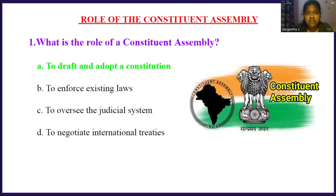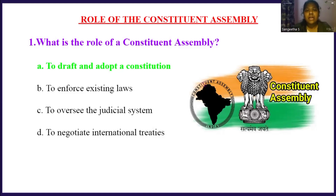In the role of constituent assembly, we will discuss a few multiple choice questions. The first one is: what is the role of a constituent assembly? Option A, to draft and adopt a constitution. Option B, to enforce existing laws. Option C, to oversee the judicial system. Option D, to negotiate international treaties. The right answer is option A, to draft and adopt a constitution. The main role of a constituent assembly is to draft and adopt a constitution.